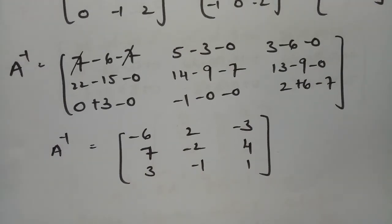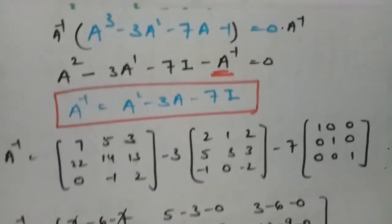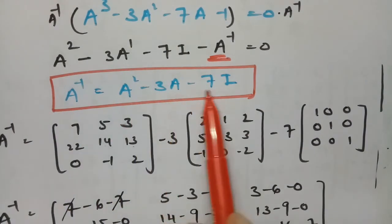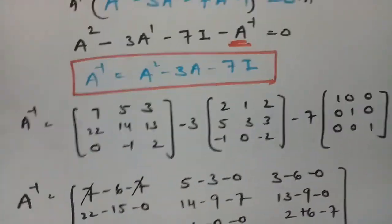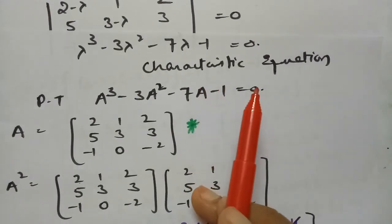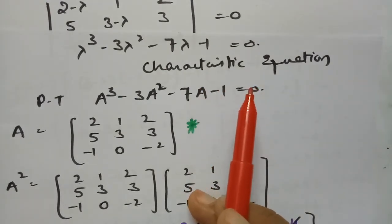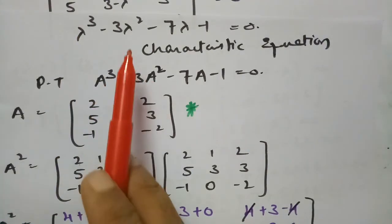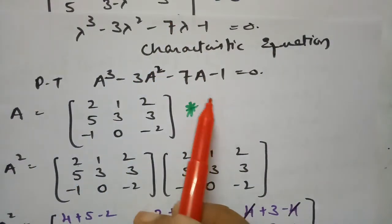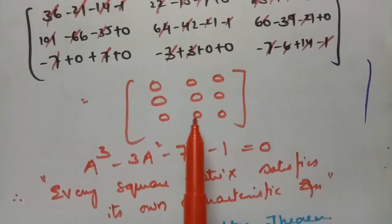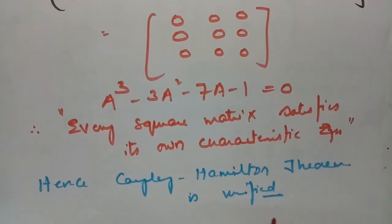This is how we calculate A inverse from the characteristic equation. Multiply A inverse on both sides to get A inverse as A² minus 3A minus 7I. First, find the characteristic equation; no need to find roots for verifying Cayley-Hamilton. Substitute A in place of lambda — A cube for lambda cube, A square for lambda square, A for lambda — compute, substitute, and all values become zero. Hence, every square matrix satisfies its own characteristic equation and Cayley-Hamilton theorem is verified.